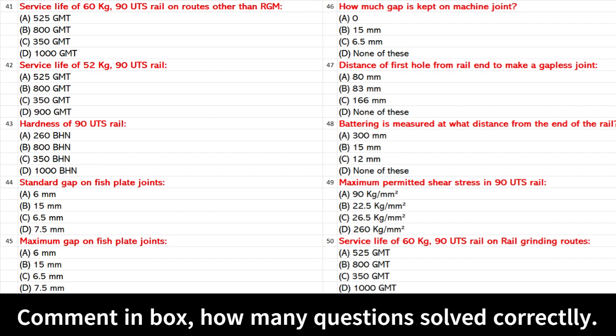Battering is measured at what distance from the end of the rail? A. 300 mm. B. 15 mm. C. 12 mm. D. None of these. Answer: A. 300 mm.